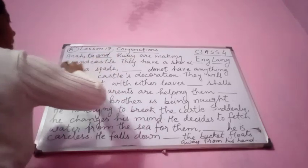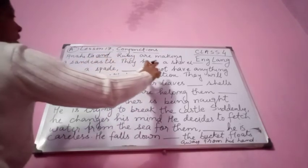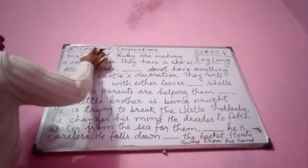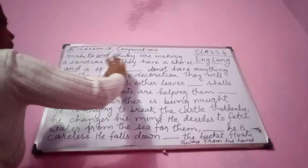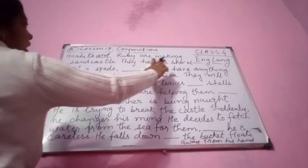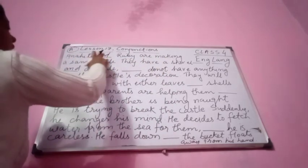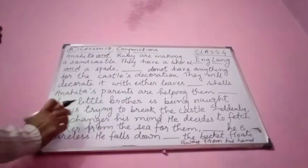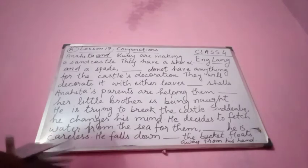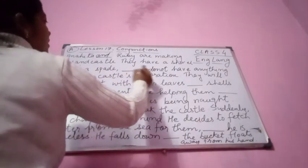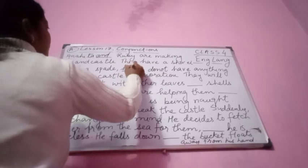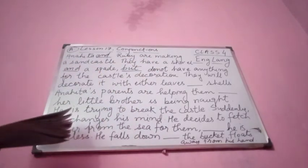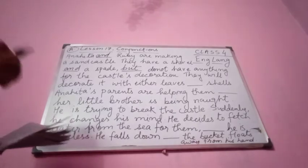Anahita and Ruby are making a sand castle. They have a shovel and a spade - two things. Here we are joining two words: Anahita and Ruby, a shovel and a spade. But they do not have anything for the castle's decoration - here 'but' shows a contrast.